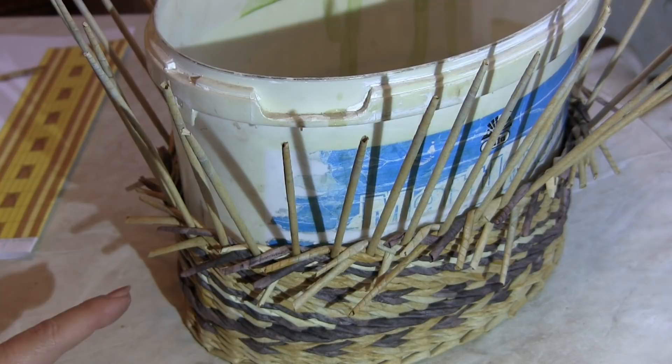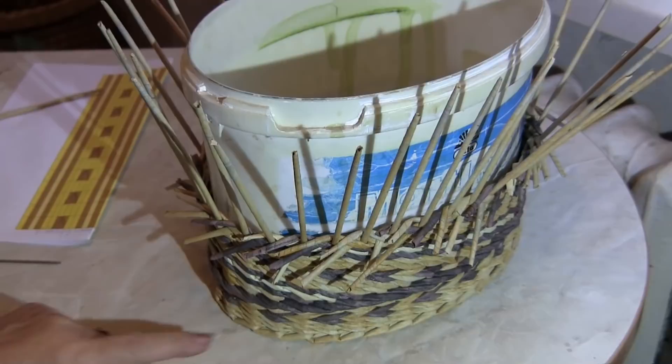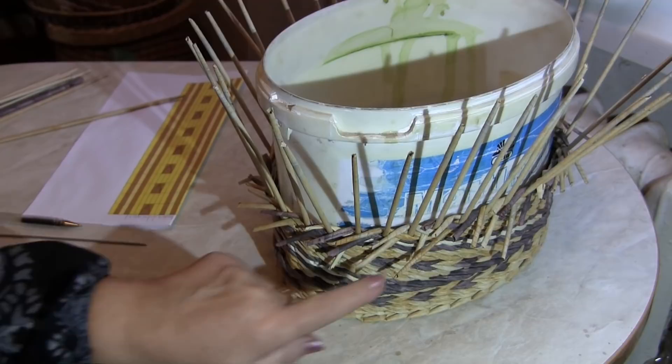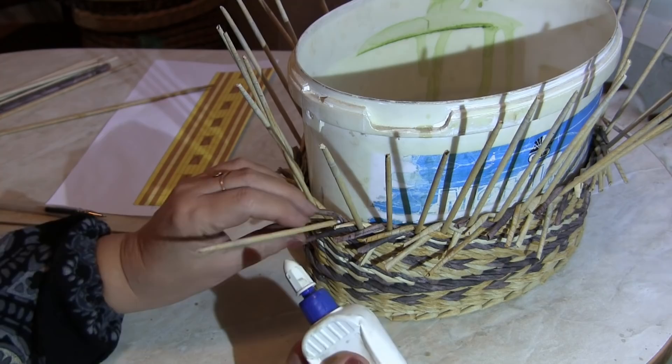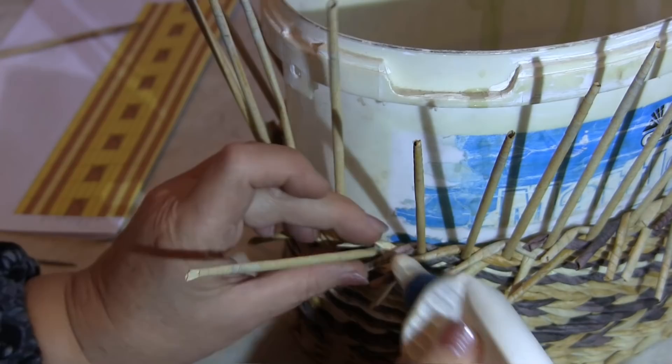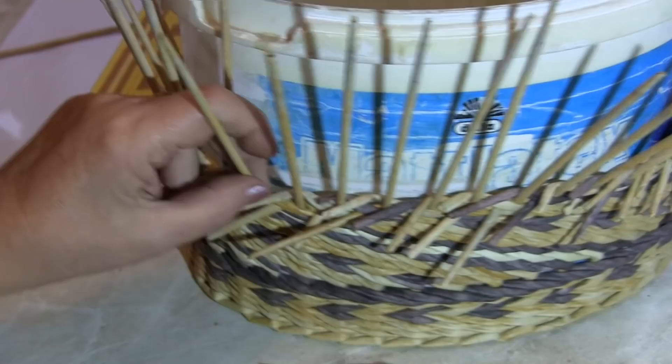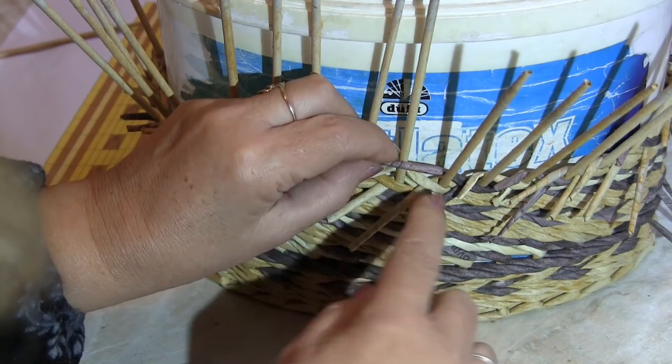I'm going to cut all the sticking tails afterwards, after I finish weaving the casket. Since I framed the pattern with a three-tube rope from beneath, now I'm going to frame it with a three-tube rope from above as well. For this purpose, first of all, I'm gluing each tail with normal school glue. I can glue one or a couple of tails at a time, no matter. The main task is to glue the top ones. The lower tails are pressed with the upper ones anyway.